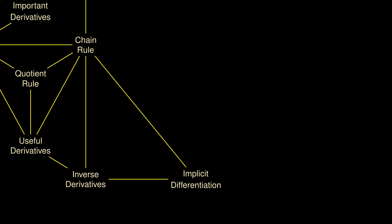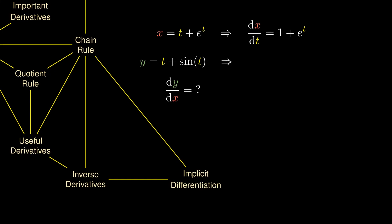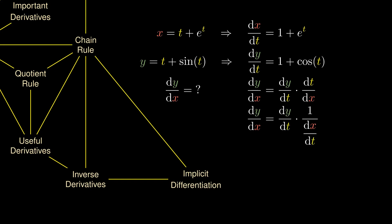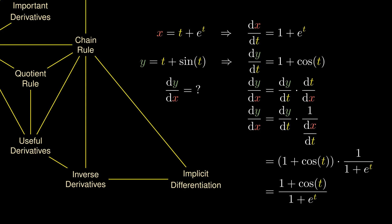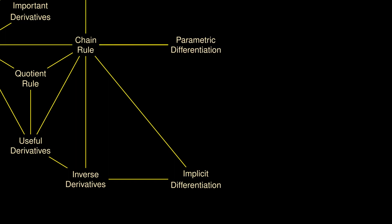What if x and y are not connected directly to each other, but are instead controlled by a parameter t? We could first differentiate x with respect to t to obtain 1 + eᵗ, and differentiate y with respect to t giving 1 + cos(t). By shifting our perspective on the chain rule, we write dy/dx equal to dy/dt times dt/dx. The expression dt/dx equals 1 over dx/dt. Since we know dy/dt and dx/dt, we can plug in the expressions and obtain dy/dx purely in terms of t. This is known as parametric differentiation.